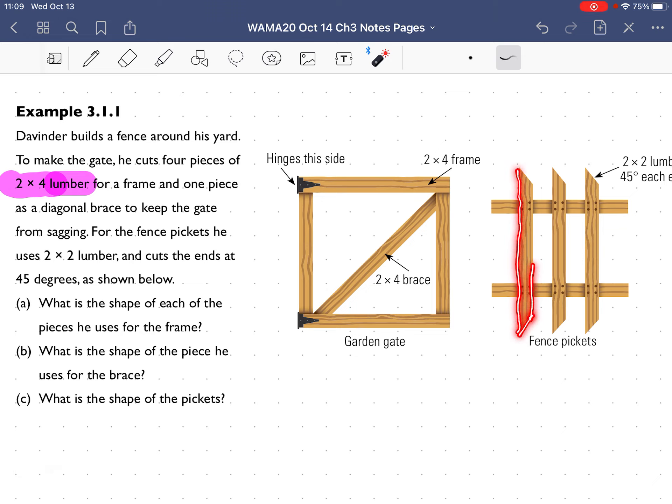For the fence pickets he's using 2x2 lumber and they are cut at 45 degrees each. What is the shape of each of the pieces he uses for the frame?